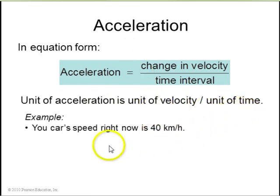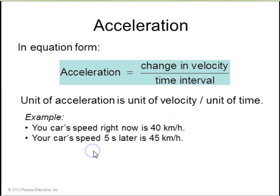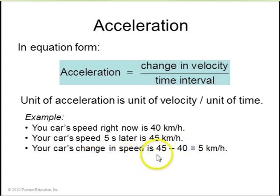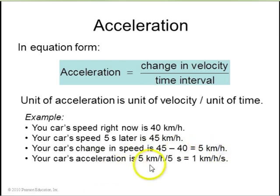Example. Your car's speed right now is 40 kilometers per hour. Your car's speed five seconds later is 45 kilometers per hour. Your change in speed is 45 minus 40 is 5 kilometers per hour. And your acceleration is 5 kilometers per hour per 5 seconds. So you divide 5 by 5, you get 1 kilometers per hour per second.